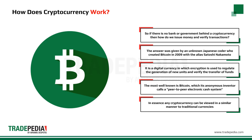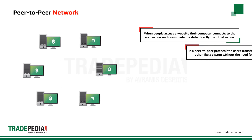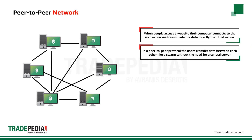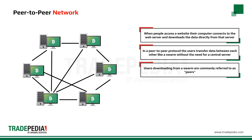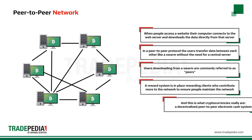Its anonymous inventor calls it a peer-to-peer electronic cash system. Any cryptocurrency can be viewed in a similar manner to traditional currencies. When people access a website, their computer connects to the web server and downloads data directly from that server. In a peer-to-peer protocol, users transfer data between each other like a swarm without the need for a central server. Users downloading from a swarm are commonly referred to as peers, and a reward system is in place to ensure people maintain the network. This is what cryptocurrencies really are: a decentralized peer-to-peer electronic cash system.